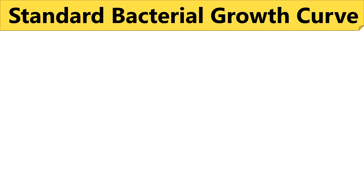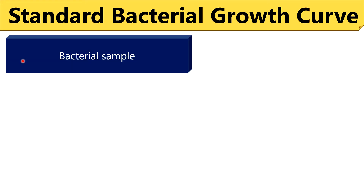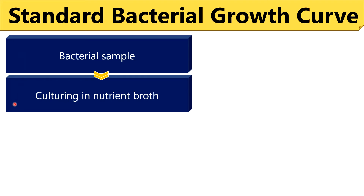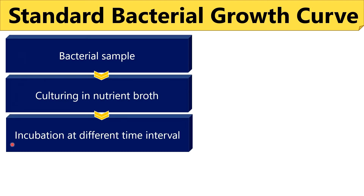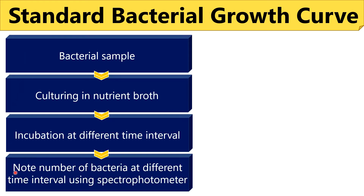It is frequently asked what the standard growth curve of bacteria is. To obtain a standard bacterial growth curve, first you need to take a sample of bacteria and culture it in a fresh or sterile nutrient broth. After inoculation, you incubate the bacterial culture at different time intervals. After incubation, you note down the optical density of the different bacterial suspensions using a spectrophotometer. By doing so, we can study the dynamics of bacterial growth.